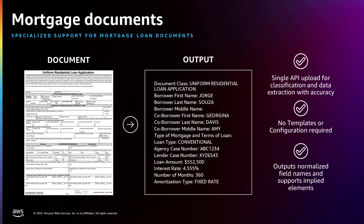Analyze Lending provides results in normalized keys and values, such as borrower first name and borrower last name. With Analyze Lending, you have a managed API that enables you to automate more parts of the operations for mortgage document processing while minimizing the chance of human error. By reducing reliance on manual processes with secure and automated workflows, Analyze Lending enables customers to more quickly and efficiently address the backlog of their mortgage loan packages with accuracy, and thereby reduce costs to the business.